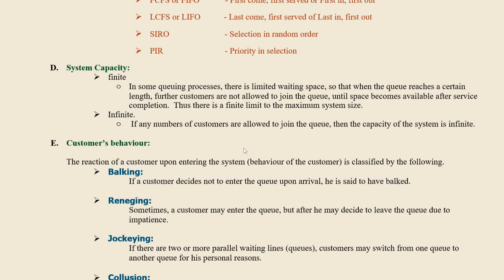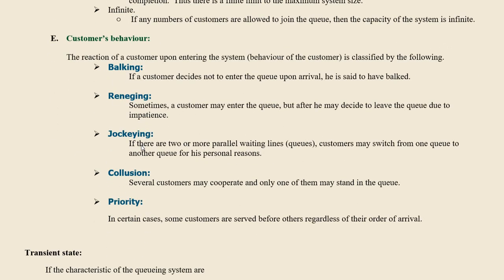The next characteristic is system capacity — how many persons may stand in the queue, which may be finite or infinite. For example, if you go to a grocery shop, the queue may have no restriction and the capacity may be infinite. But if you go to a ration shop in a village, there is a restriction — only a certain number of persons can stand in the queue, so the capacity is finite.